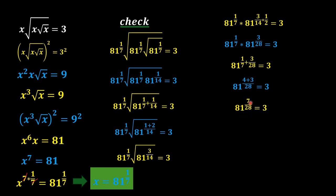In the next step we convert 81 as 3 to the power 4. The 7s cancel, and 4 and 4 cancel out, leaving us with 3 on the left side equal to 3 on the right side. The left side equals the right side, confirming our answer is correct.